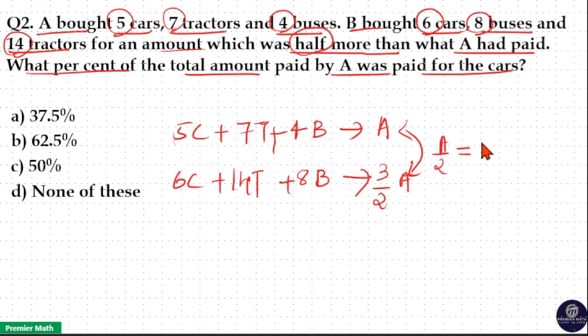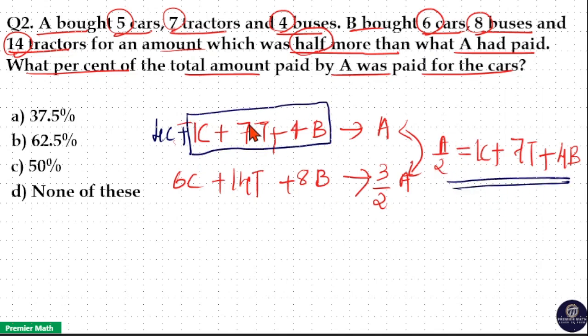This equals 6C minus 5C is 1C, plus 14T minus 7T is 7T, and 8B minus 4B is 4B. Now you can see if I write 5C as 4C plus 1C, then this equals A by 2. That is, 4C plus 7T plus 4B plus 1C equals A by 2, which means the total amount paid by A is this.